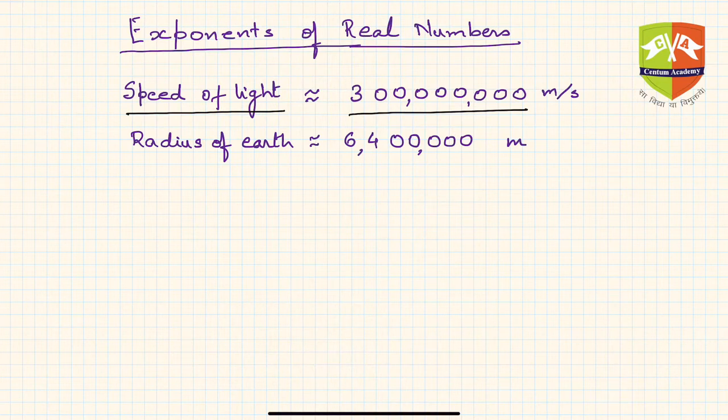Now, if you are doing a calculation related to speed of light in physics and every time you need to mention the value, it will be too cumbersome to write three followed by eight zeros. Instead, if you closely observe, three followed by eight zeros can be written as three times one followed by eight zeros.